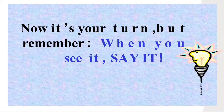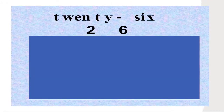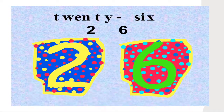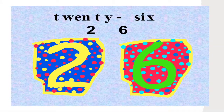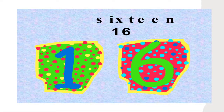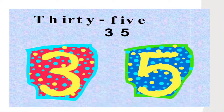Now it's your turn. Remember, when you see the number 26, what is the answer? Two tens and six ones. Very good. How about 16? What is your answer? One ten and six ones. Very good. And the last one: 35 — three tens and five ones.